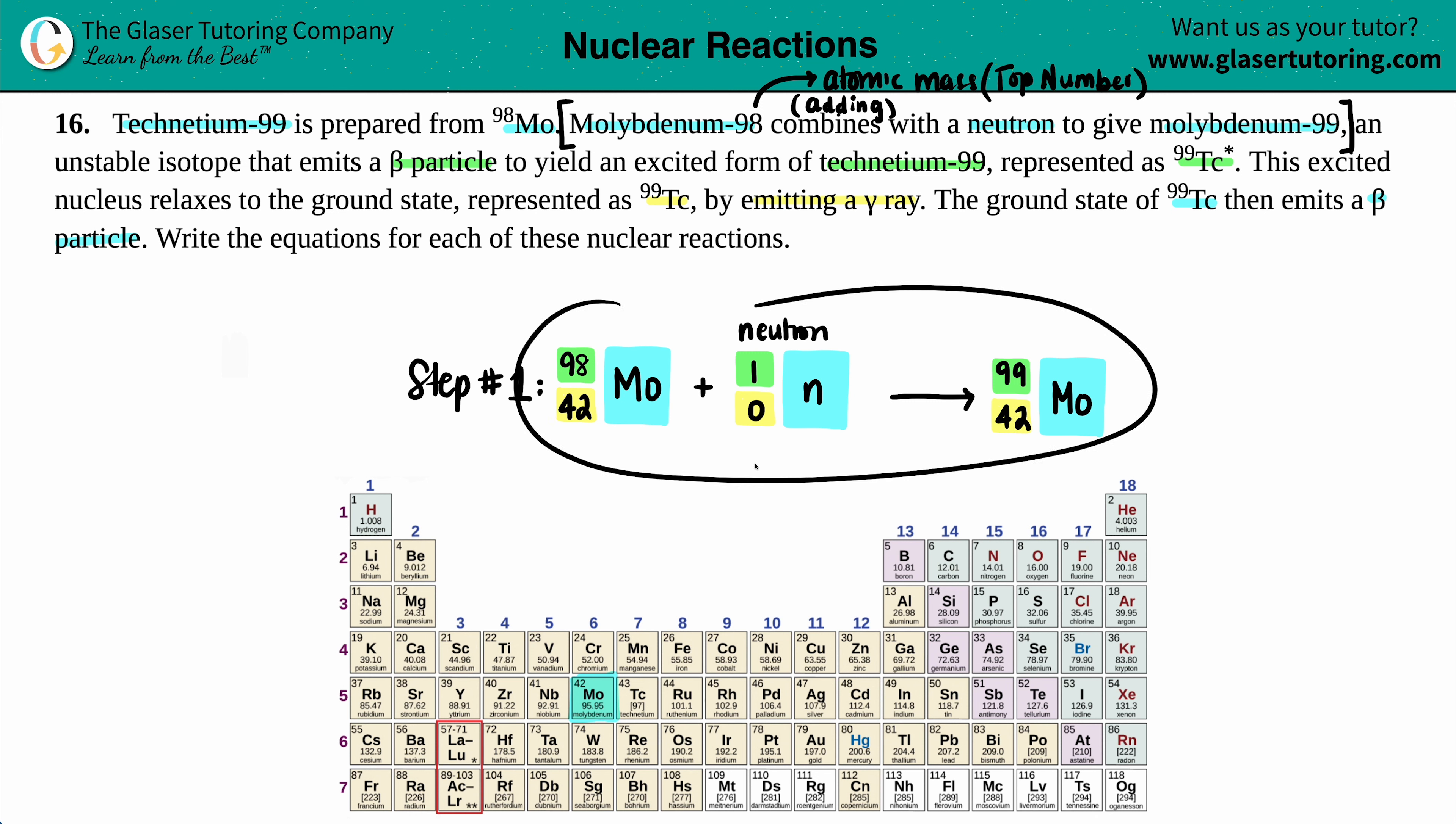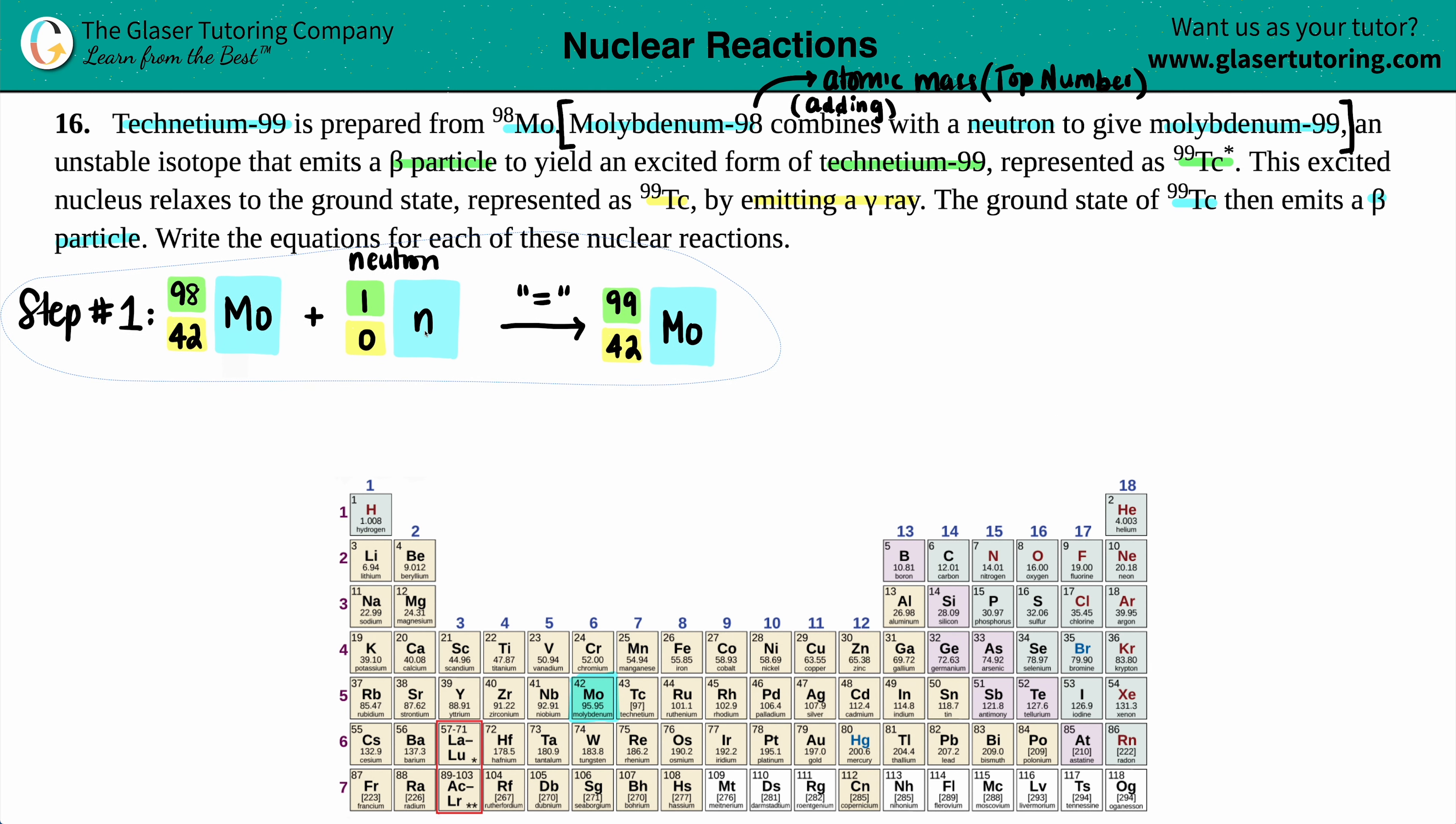Now, before we put this off to the side, we just need to make sure that the greens, the top numbers, are the same on opposite sides of the yield sign. Think of this sign as an equal sign. So, let's see. 98 plus 1 is 99. And that equals 99. So, the tops check out. Let's just make sure that the bottoms check out. 42 plus 0 equals 42. So, we're good. We did our first step. Let's throw that over here.